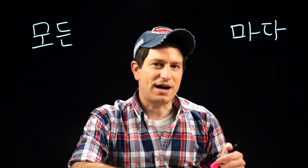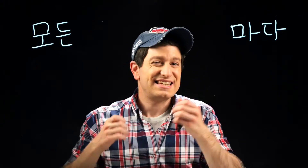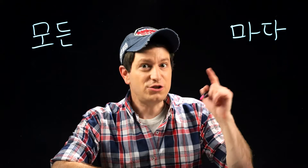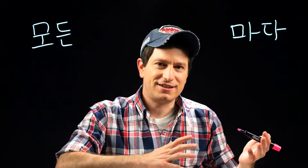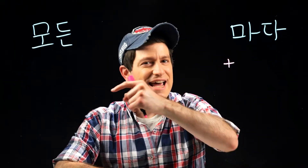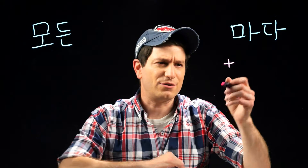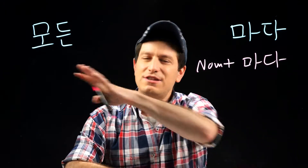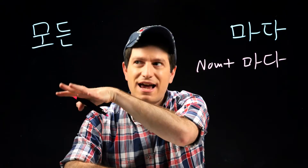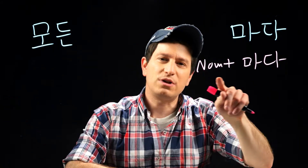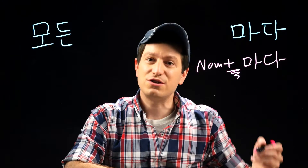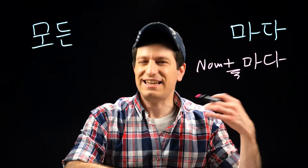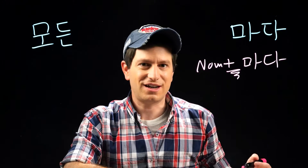Next we have 마다. 마다 means 'each' — so not 'every' but 'each', as in each one, individually. And it's used after a noun instead of before a noun. So here you'll have a noun followed by 마다. While 모든 is used with a space as a regular adjective, 마다 attaches directly with no space. This means 'each' with a focus on the individual noun you're talking about.